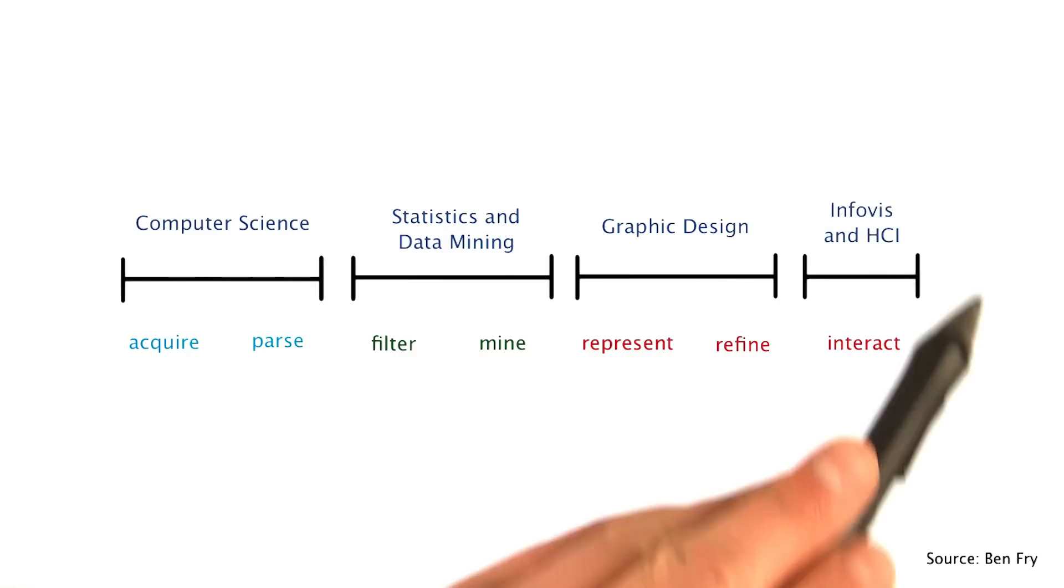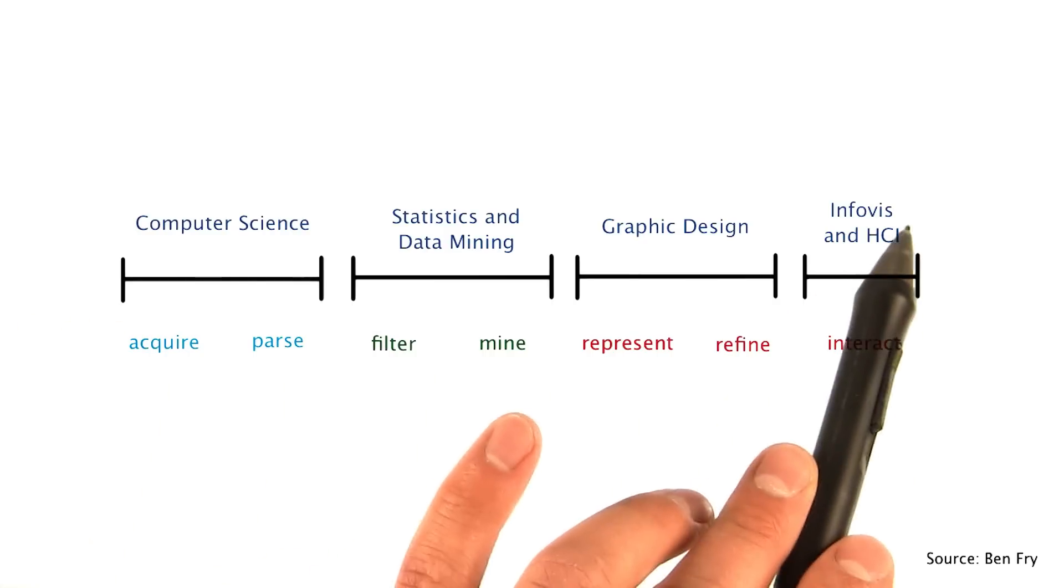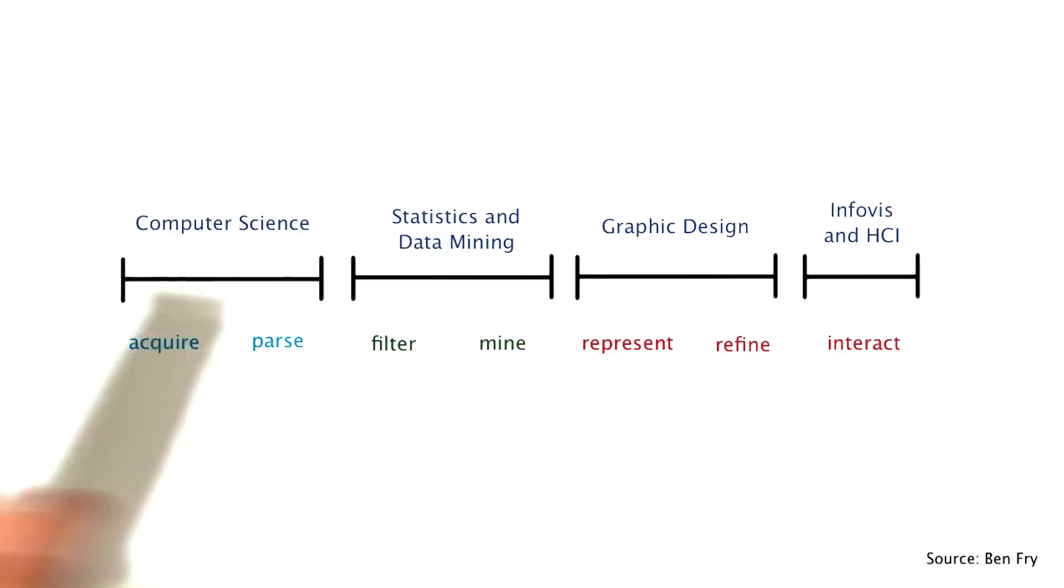And the fourth stage here is concerned with how a reader or your audience might interact with your visualization. Techniques from the field of information visualization and human computer interaction apply here to determine how best to design your graphic or visualization such that it enables your user to potentially discover insights for themselves.